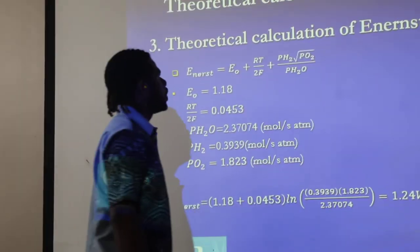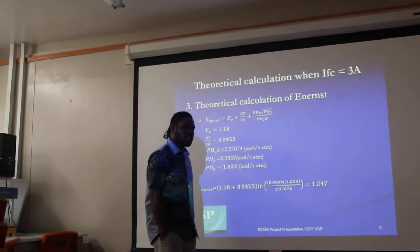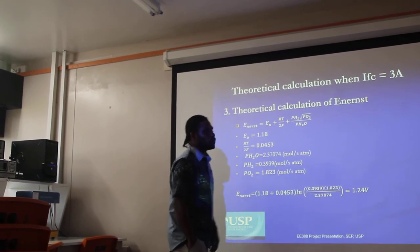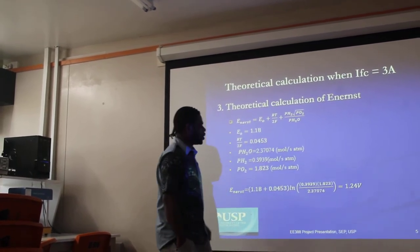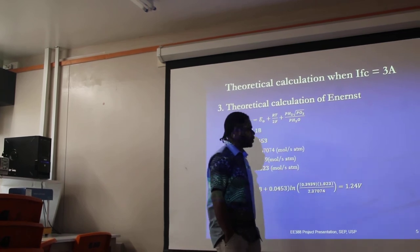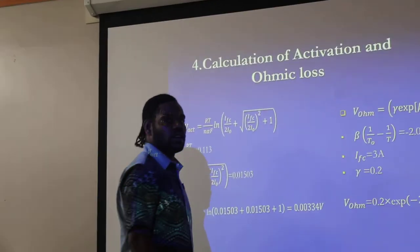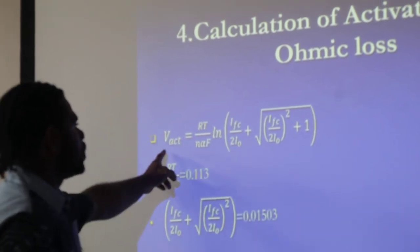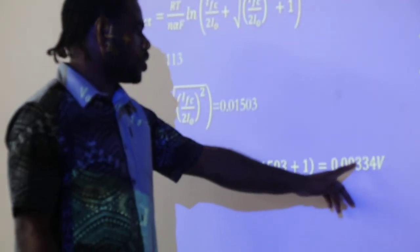Here, we have done a manual calculation assuming a current density of 3 amps. For the Nernst voltage value, we applied the equation and obtained a value of 1.24V. Similarly, for the activation loss, the activation voltage is given by the formula, and we obtained a value of 0.00334 volts.